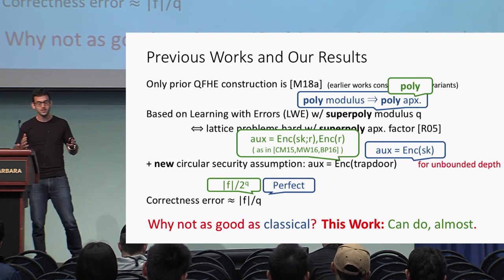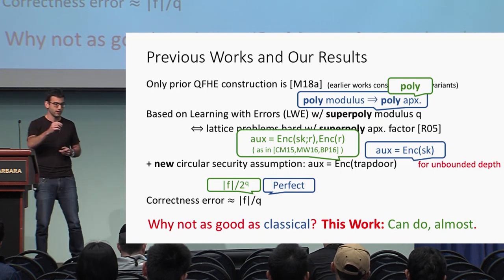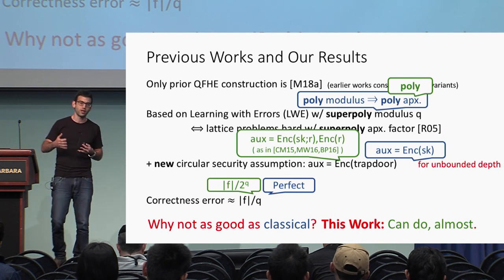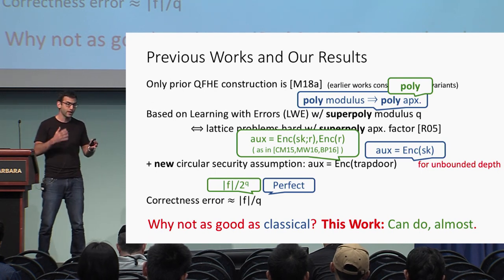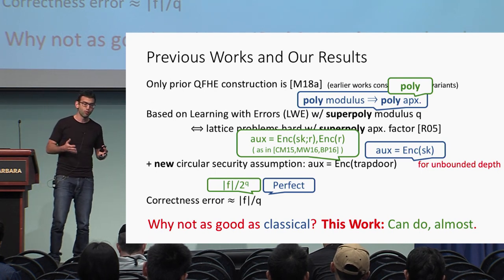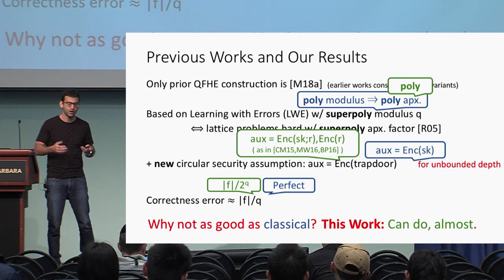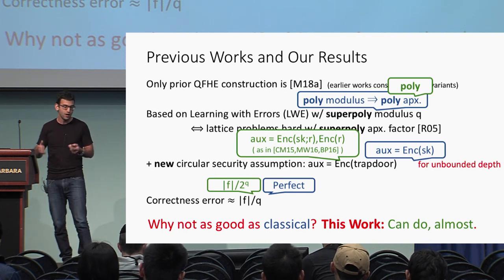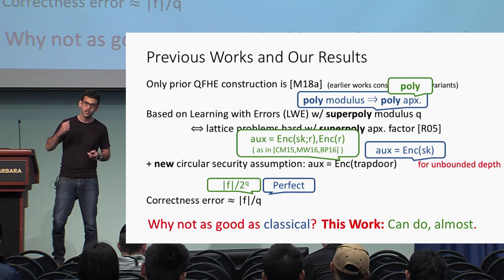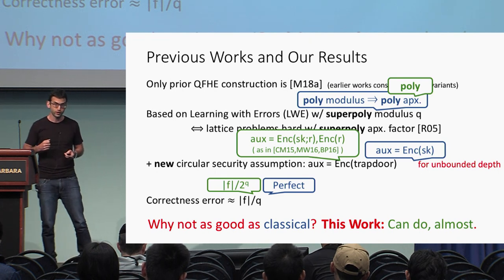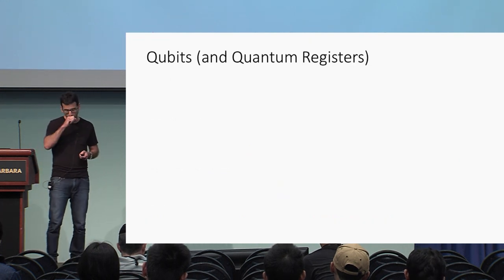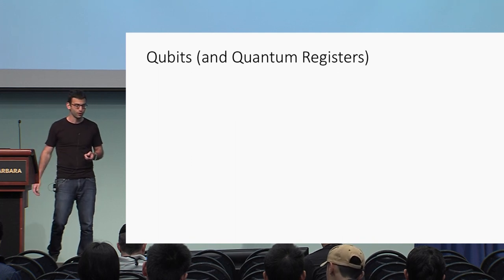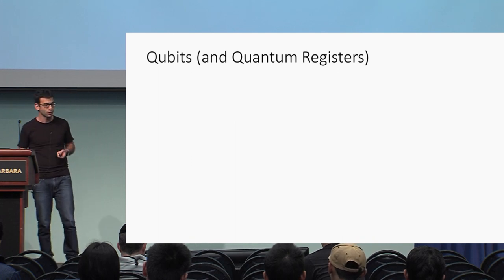Perhaps as important as the specific contributions, we have a conceptual approach to the problem that connects quantum homomorphism with the circuit privacy notion, and this sheds new light even on previous works. But first, let's do a little primer about qubits and quantum registers.